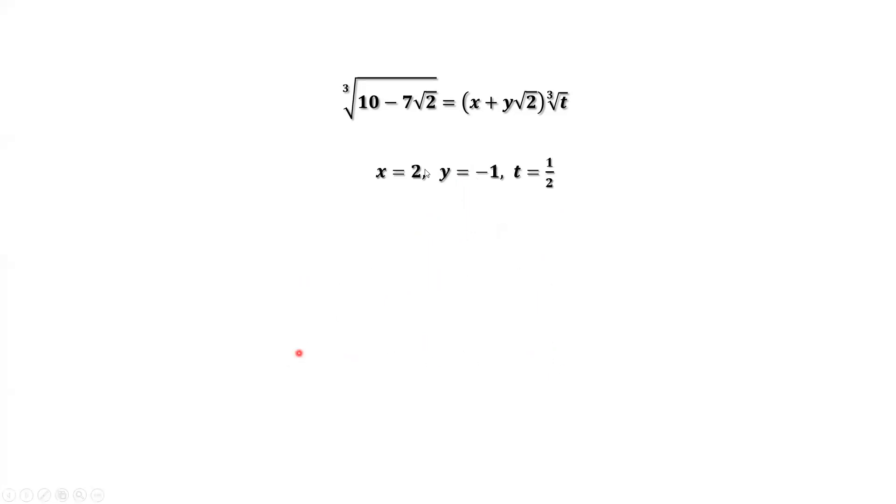Right now, we have all three numbers for x, y and t. It's ready to derive the final answer. Just replace x, y and t by these three numbers. We have this. Continue to simplify. We have the final answer. The third root of 4 minus the sixth root of 2 is the final answer.